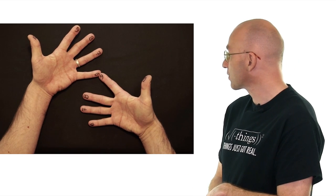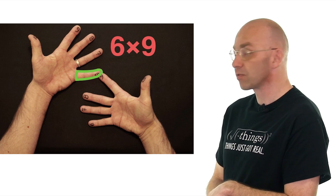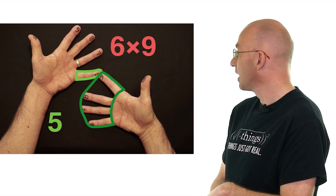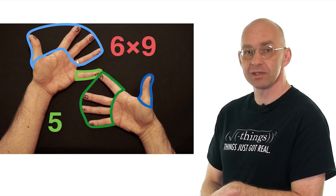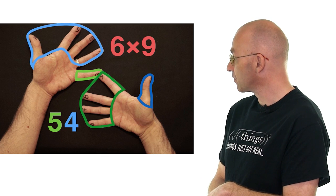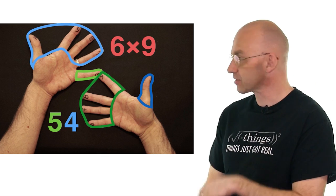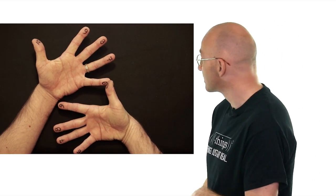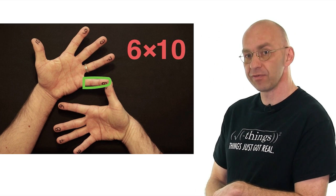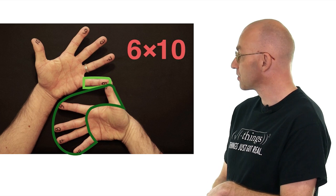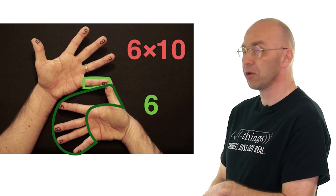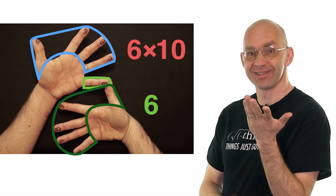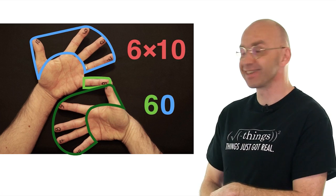Let's do another example. Here we've got 6 times 9. So here on that side we've got 1 finger. On that side we've got 4 fingers. 1 plus 4 is 5. And then on top we've got 4 and 1. 4 times 1 is 4. So 54 is 6 times 9. Works. Let's just do one more. We do 6 times 10. Now on that side we've got 1 finger. Here we've got 5. 1 plus 5 is 6. Now on top it gets kind of neat. We've got 4. On the other side we've got 0. So 0 times 4 is 0. Works. 60 is 6 times 10.